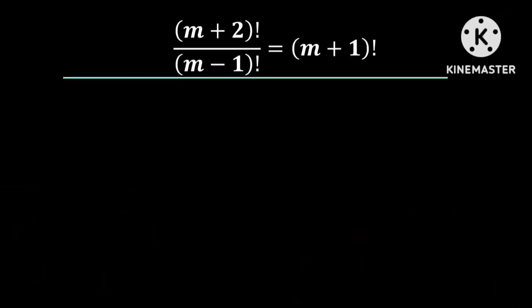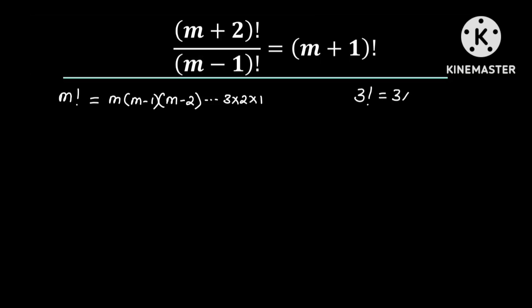Hello everyone. In today's video we are going to be solving a factorial equation. We are given that (M+2)! divided by (M-1)! is equal to (M+1)! and we need to find the value of M. We know that M factorial is the product of all positive numbers between 1 and M — that is, M! = M × (M-1) × (M-2) × ... × 3 × 2 × 1. For example, 3! = 3 × 2 × 1 = 6.